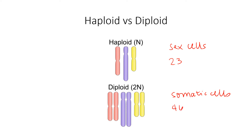So our diploid or somatic cells will carry 23 pairs or 46 total chromosomes. N simply means 23, and 2N means 2 times 23, or 46 total chromosomes.